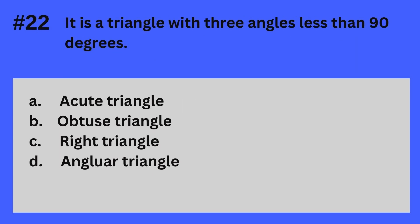Question 22. It is a triangle with three angles less than 90 degrees. A. Acute triangle. B. Obtuse triangle. C. Right triangle. D. Angular triangle. The answer? It's A. Acute triangle. It is a triangle with three angles less than 90 degrees — Acute triangle.